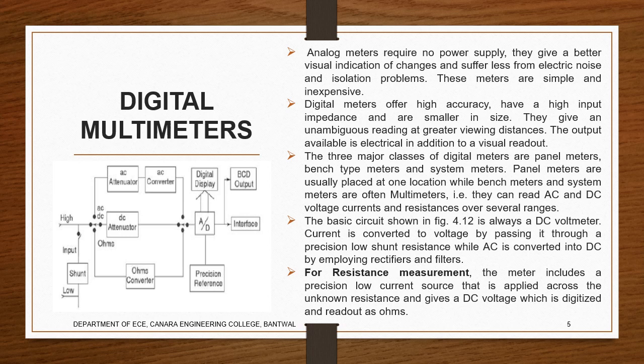Next we'll see digital multimeters. Here, analog meters require no power supply because they use the deflection principle, so you can avoid some electric noise, isolation problems and connections. These meters are usually simple and inexpensive. But when it comes to digital meters, they offer high accuracy, high input impedance, and they are very small in size. The benefit is you can keep a digital meter at a distance and you can view it, compared to analog meters.